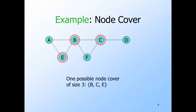But here's one example that works. B, C, and E together cover all the edges. Thus, given this graph and the budget K equals three, the answer is yes. The same answer applies if the instance of node cover is this graph with a higher budget. However, if we are given this graph with a budget of two or less, the answer is no.